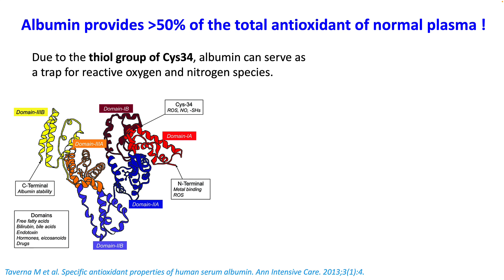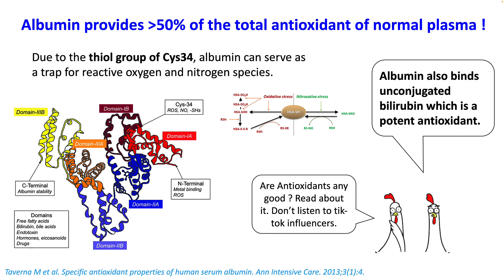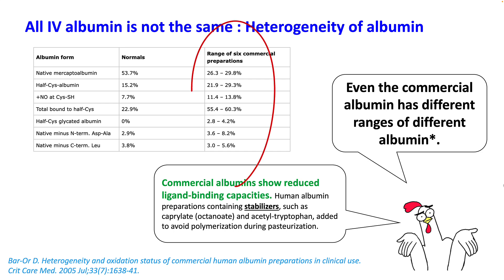Albumin provides more than 50% of the total antioxidant property of normal plasma, because of the thiol group present in the cysteine amino acid at position 34. Albumin can serve as a trap for both reactive oxygen and nitrogen species. It also binds unconjugated bilirubin, which is a potent antioxidant. Because of this antioxidant property, albumin is present in three different forms that differ in their redox activity: human mercapt albumin (~70–80% of total plasma albumin) with strong antioxidant properties, non-mercapt albumin 1, and non-mercapt albumin 2, which does not have good oxidation properties. All albumin is not the same — commercial albumin shows different ranges of these forms and has reduced ligand-binding capacity compared to intrinsic albumin.